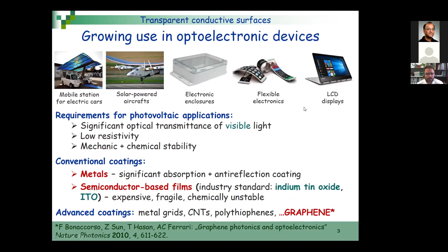Without going into details, optoelectronic devices will rely much on carbon because photovoltaic applications need to transmit visible light, need to have low resistivity, and also mechanical and chemical stability, as was already mentioned by my colleague from Manchester. The conventional transparent coatings are made of metals, but they are still absorbing a lot of light, so they are not actually transparent.